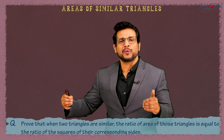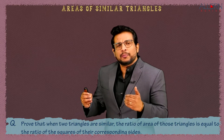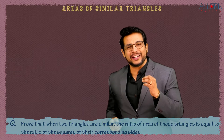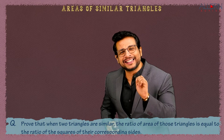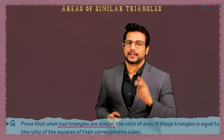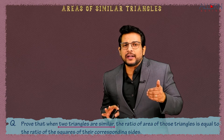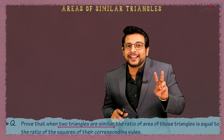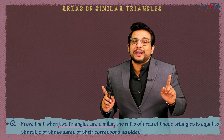In examinations, they'll give us a statement and say 'prove it.' Whenever there's a statement, there's a theorem to be proved. The first thing we need to understand is what we are supposed to draw. Since the theorem involves two similar triangles, we are supposed to draw two similar triangles.